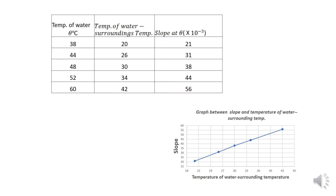Now this is the results table. At various temperatures, the slope values are: 21×10⁻³, 31×10⁻³, 32×10⁻³, 38×10⁻³, 44×10⁻³, and 56×10⁻³ degrees centigrade per second. This is the slope at each particular temperature. Subtracting the room temperature from the water temperature gives the excess temperature. If you draw a graph between the slope and the excess temperature, this graph will be a straight line — that is the proof for Newton's Law of Cooling. Thank you.